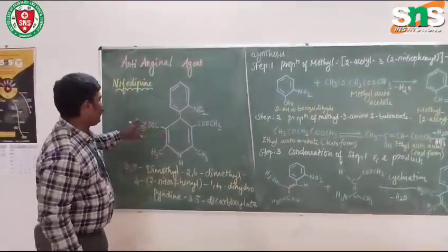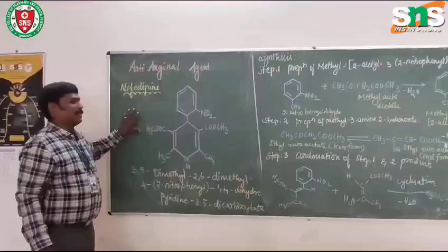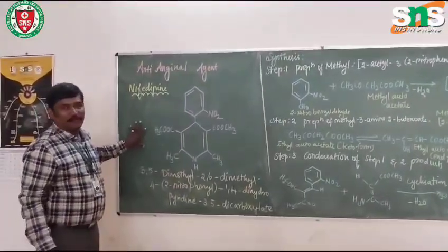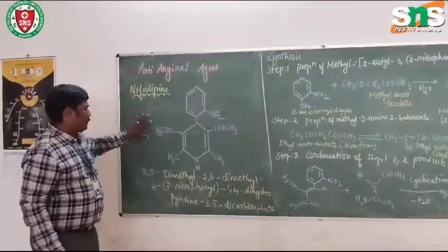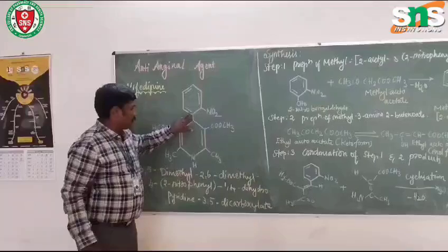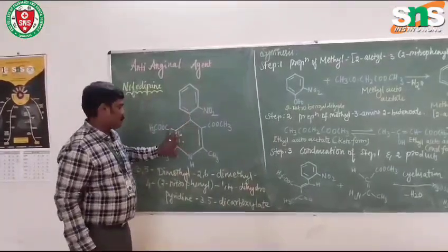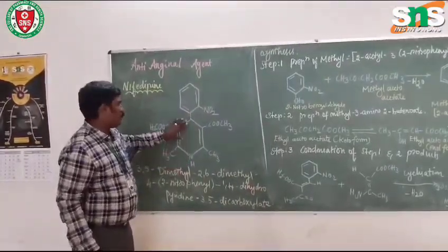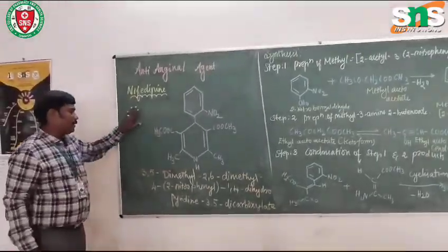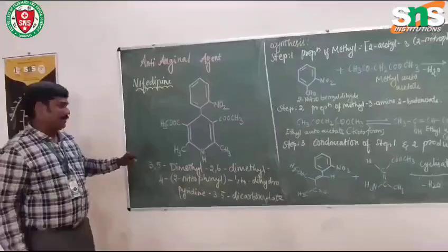Normally, pyridine will contain a structure that is a 6-membered ring in which 1 nitrogen atom will be present. Here, in first position and fourth position, we have substitution. Then it is called as 1,4-dihydropyridine derivative, this is a 1,4-dihydropyridine derivative.